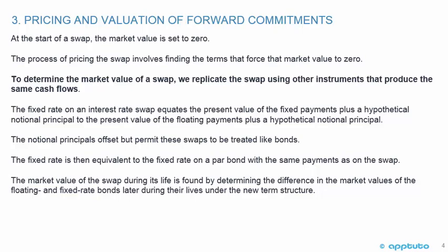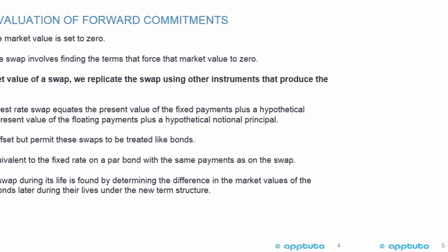The market value of the swap during its life is found by determining the difference in the market values of the floating and fixed rate bonds under the new term structure. Those last two bullet points are more important in CFA Level 2 than in Level 1 — it's a nice-to-know rather than a need-to-know.